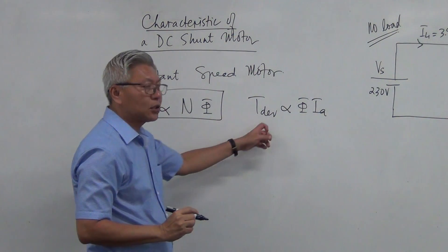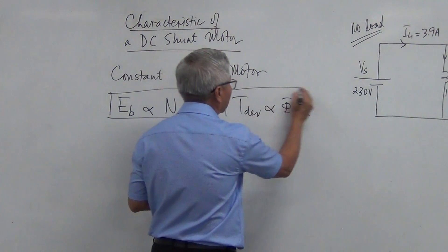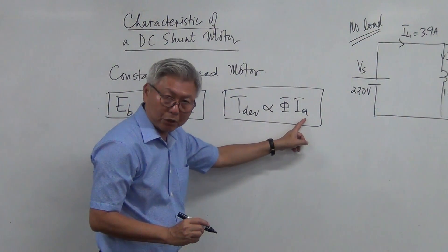And the next one is torque is proportional to flux Ia. Torque developed is proportional to flux Ia. Flux is magnetic flux, Ia is the armature current.